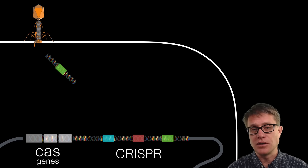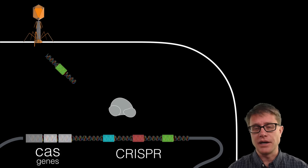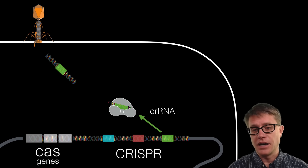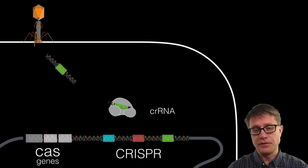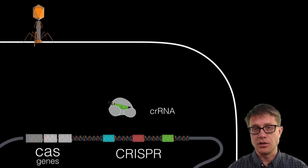But since the bacteria has this CRISPR system, what it is going to do is transcribe and translate proteins — this Cas complex — and also transcribe that DNA to make what is called CRISPR RNA, which fits right into this protein. This is a way to fight that viral DNA. It essentially breaks it apart, and so before the infection starts, the infection has essentially ended.